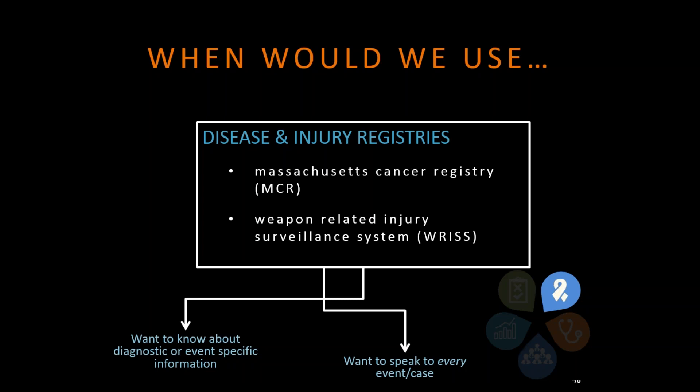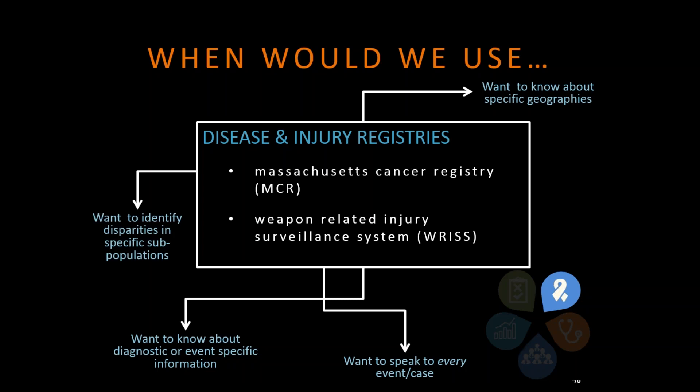Disease registries are also very useful if you want to know about diagnostic or event specific information — they include things like labs and stage of cancer diagnosed. They're also useful when you want to know about specific geography, since this literally covers the whole state, so you could look up for your particular town how many people were diagnosed with cancer. You can also identify disparities in subpopulations — literally everyone with that condition is in this data set, so you can dig down and look at disparities for Asian women or African American women versus men. And because these registries have been in place for a long time, you can use them to trend information over time.